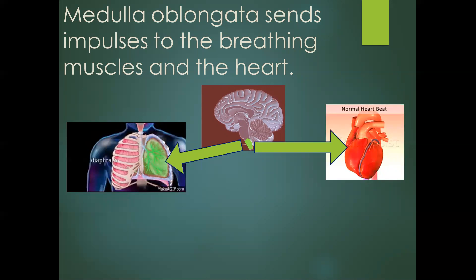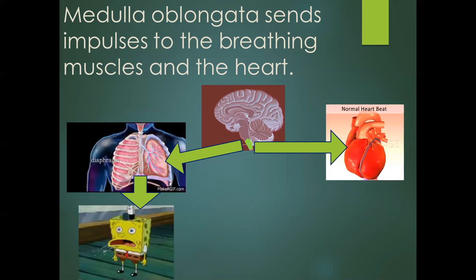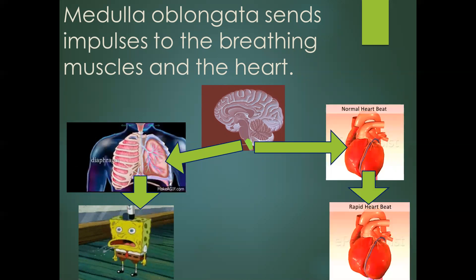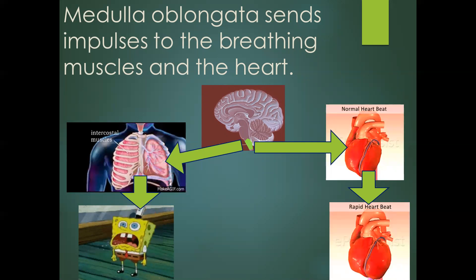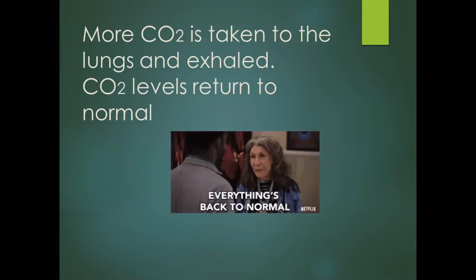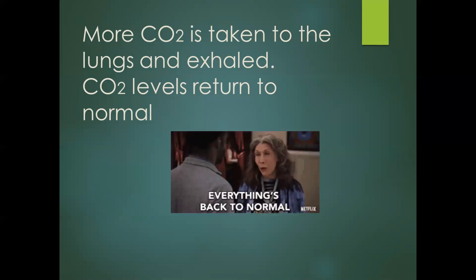The impulses to the breathing muscles increase the rate and depth of breathing, and the impulses to the heart cause the heart rate to increase. Because of the increased heart rate, blood moves much quicker through the body, and more carbon dioxide is taken away from the cells to the lungs. The increased rate and depth of breathing means more carbon dioxide is exhaled, so carbon dioxide levels go down and return to normal.